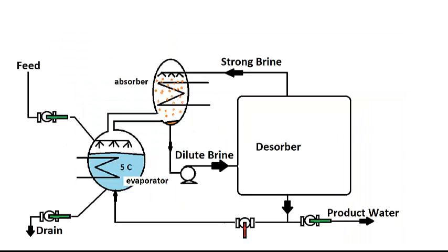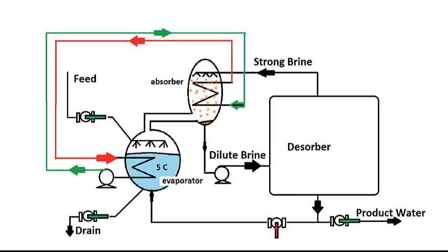In our previous unit, we looked at the purification of brackish water using a modified absorption chiller. And we noted that a simple heat transfer circulation loop can enable the absorber to drive the evaporator with its waste heat.